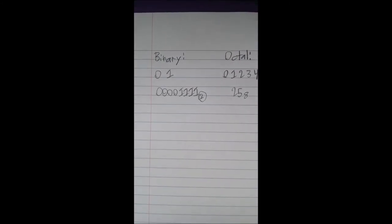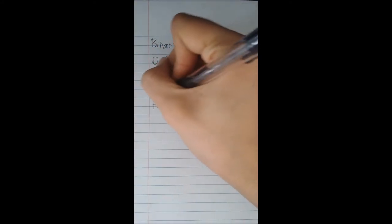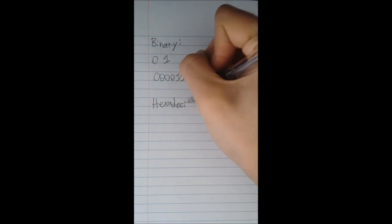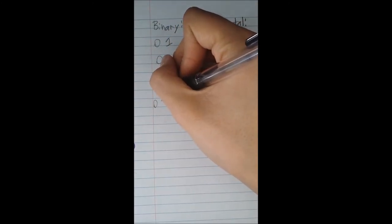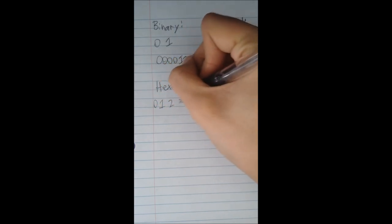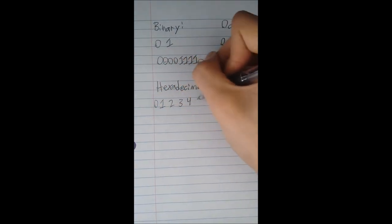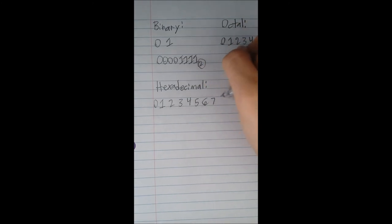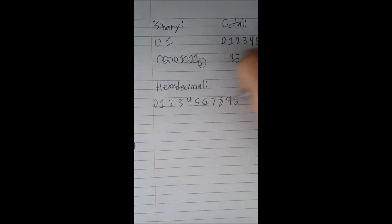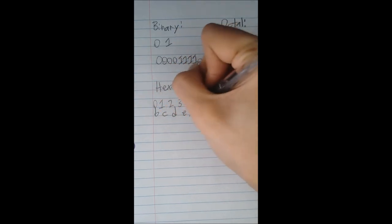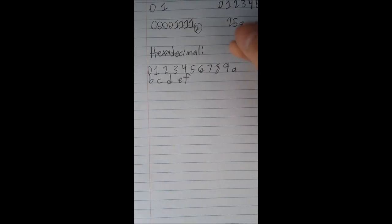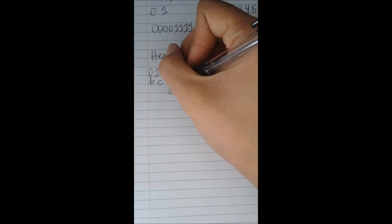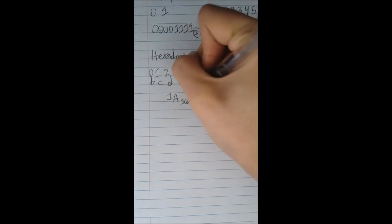Then here's our last one, which is our hexadecimal. You have 0 through F. There's 16 possible digits: 0, 1, 2, 3, 4, 5, 6, 7, 8, 9, A, B, C, D, E, F. So those are your 16 digits. Then an example would be, let's just put 1A. Then you have a subscript of 16.